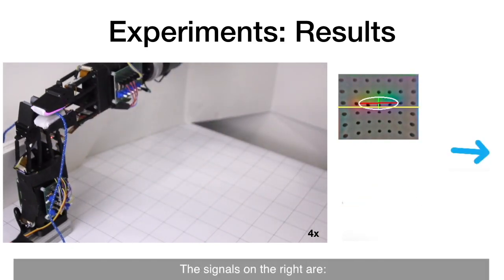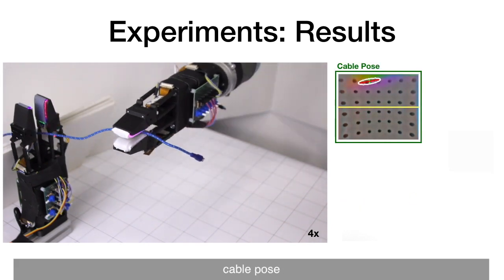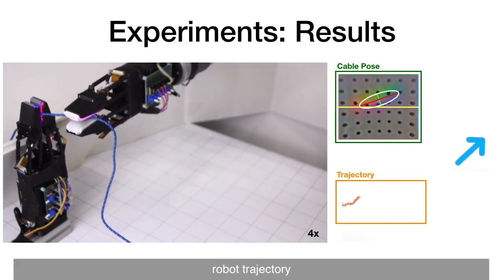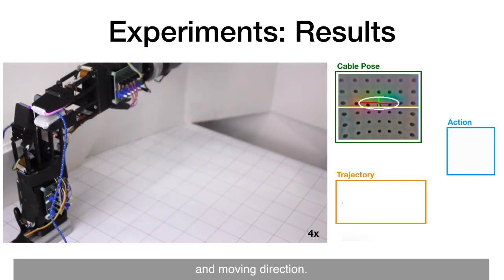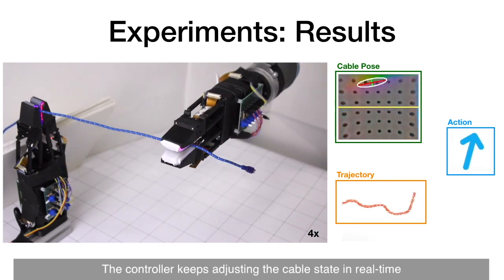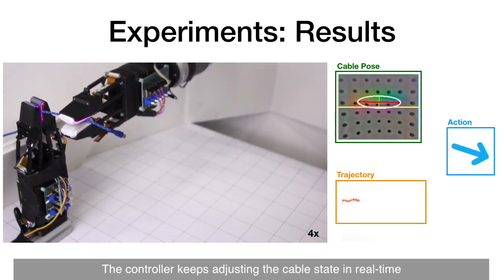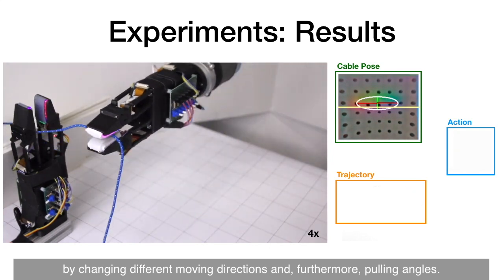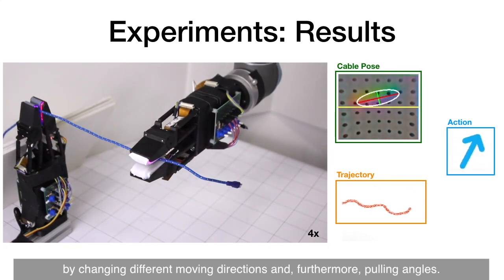This shows an example of a robot following a USB cable. The signals on the right are cable pose, robot trajectory, and moving direction. The controller keeps adjusting the cable state in real-time by changing different moving directions, and furthermore, pulling angles.